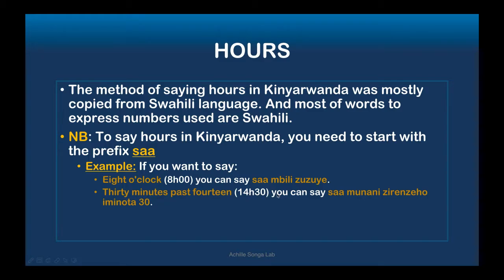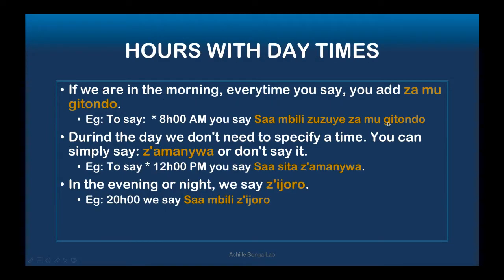For 30 minutes past an hour, you add the minutes after the hour. For example, 30 minutes past 14 — you say the hour with 'sa-' prefix, then add 'na minota mirongo itatu' for 30 minutes. That's 30 minutes past that hour.